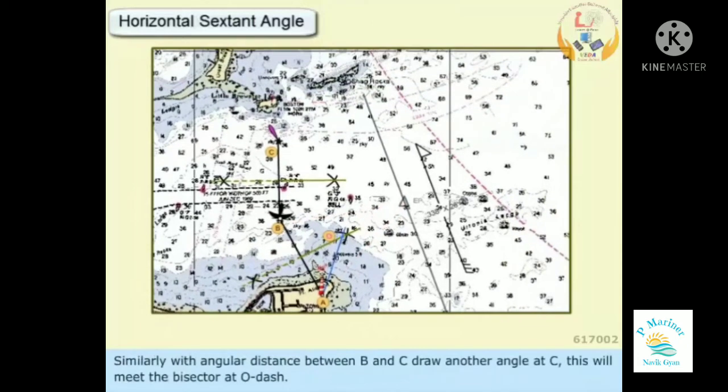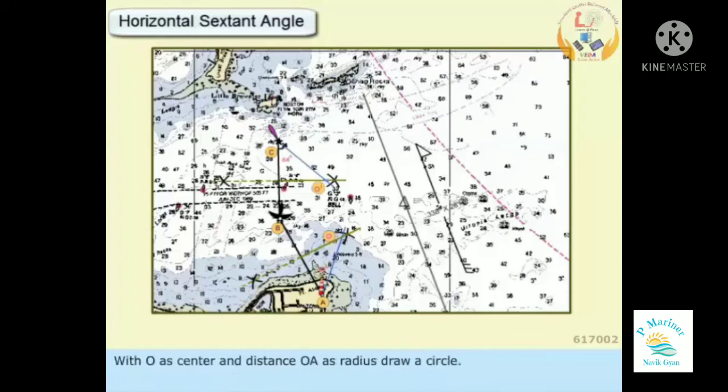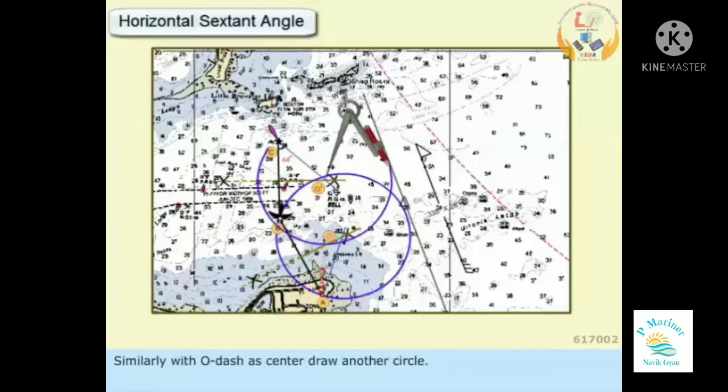Similarly, with angular distance between B and C, draw another angle at C. This will meet the bisector at O'. With O as center and distance OA as radius, draw a circle. Similarly, with O' as center, draw another circle.